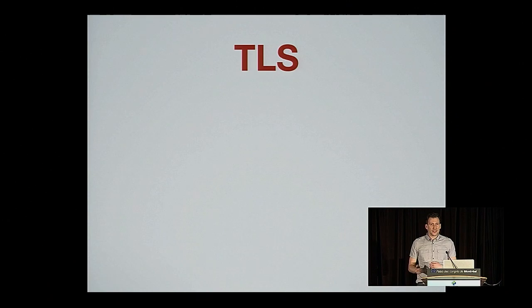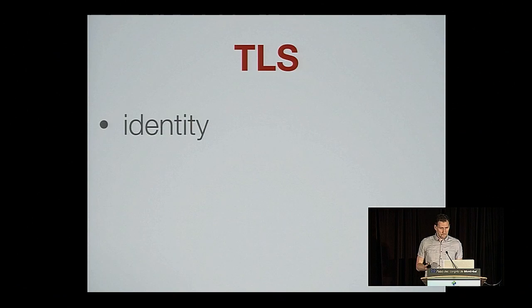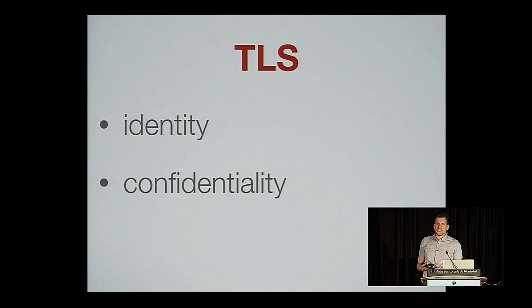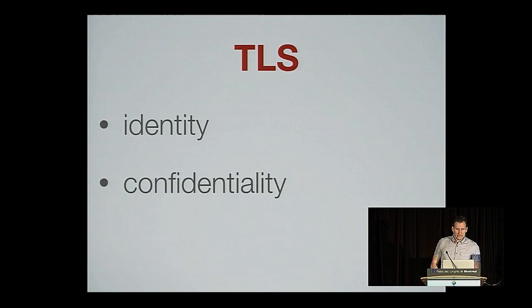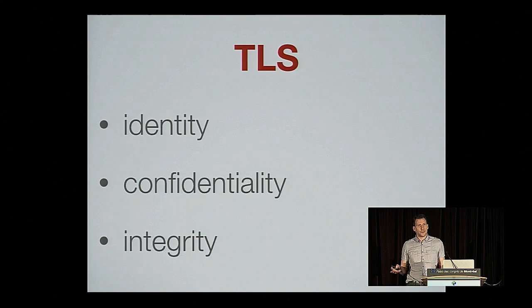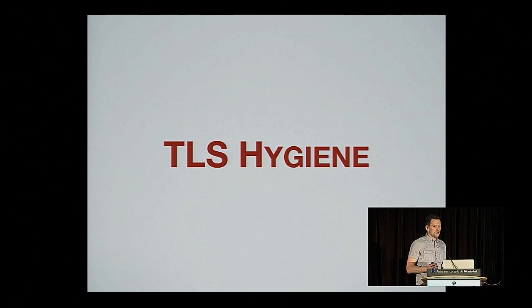So what does TLS actually want to provide you with? First, there's peer identity using certificates, so you can verify you're connecting to the peer you actually wanted to connect to. Then it gives you confidentiality using encryption, so people eavesdropping on your network can't sniff out your secrets and passwords — that's what most people think of when they think of TLS. But it's only a third of the package. The last part is message integrity: the protocol can detect when packets arrive mangled, out of order, multiple times, or not at all. That's TLS in a nutshell.